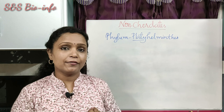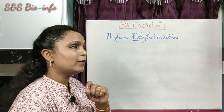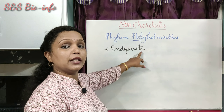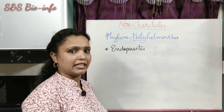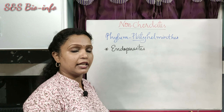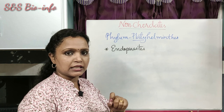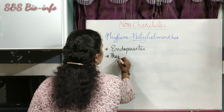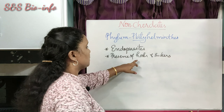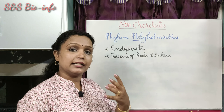Now let's look at the specific features. They are mostly endoparasites found in animals including human beings, though a few are ectoparasites living on the body surface of the host. These parasitic animals have adaptations such as hooks and suckers. Hooks are used for holding inside the host's body, and suckers are used for absorbing digested food from the host.